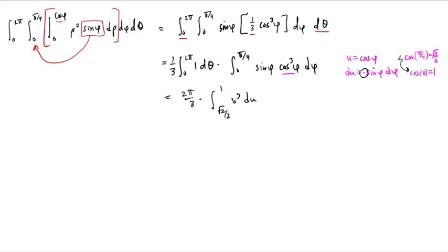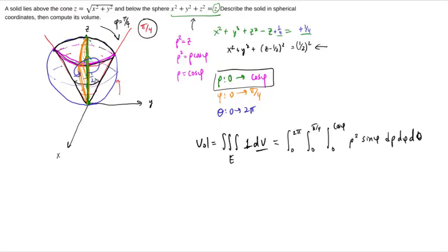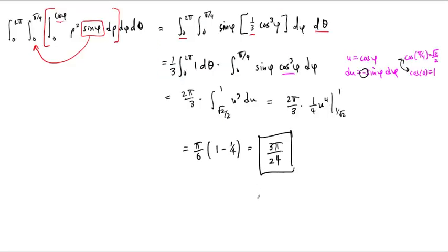And we've got 2 pi over 3 times 1 fourth u to the fourth. Plug in these bounds. So this is 1. This is just 1 over root 2. We can cancel this 4 with this 2 and just write this as pi over 6, times the difference of 1 to the fourth, which is 1, minus 1 over root 2 to the fourth, which is 1 fourth. And so this whole thing, this is just 3 fourths then. And we end up with 3 pi over 24 for the volume of this cone capped off with a sphere. So this is like the shape of this region is like a snow cone that's been piled up on top of a cone. And the volume of that is 3 pi over 24.